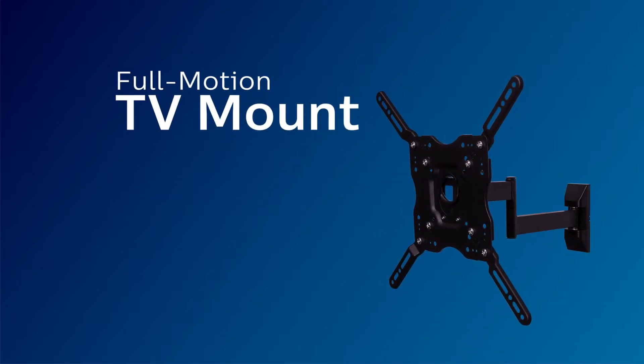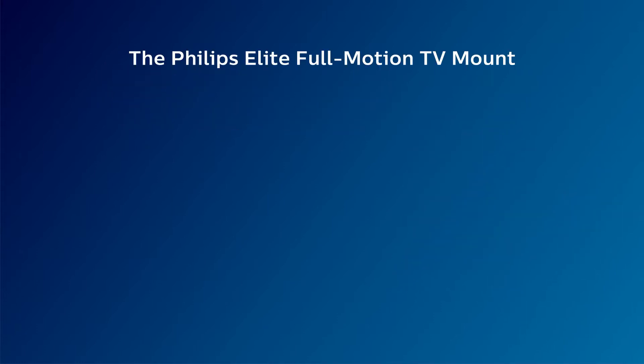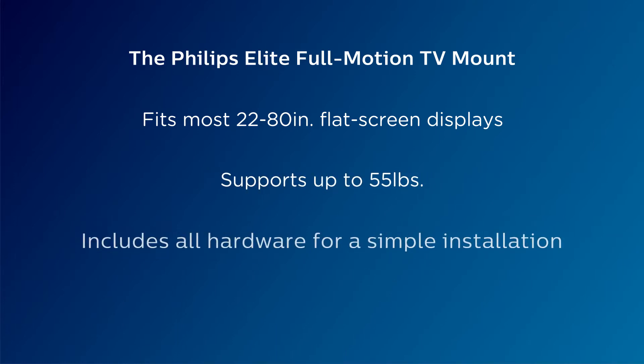Installing your Philips Elite Full Motion TV mount lets you proudly and securely display the centerpiece of your entertainment system. Designed for 22 to 80-inch flat screens, this TV mount holds a combined weight of up to 55 pounds.